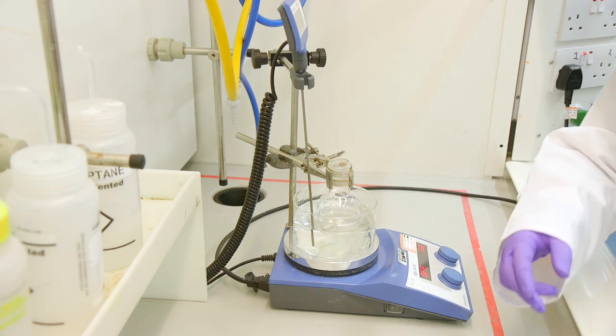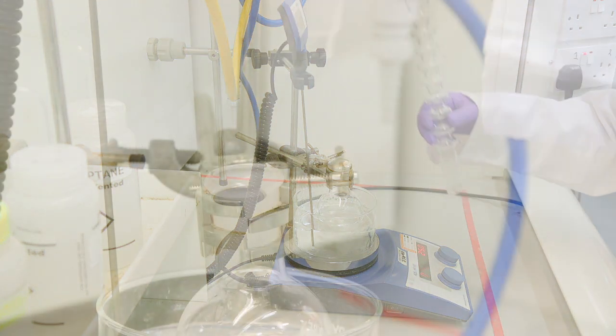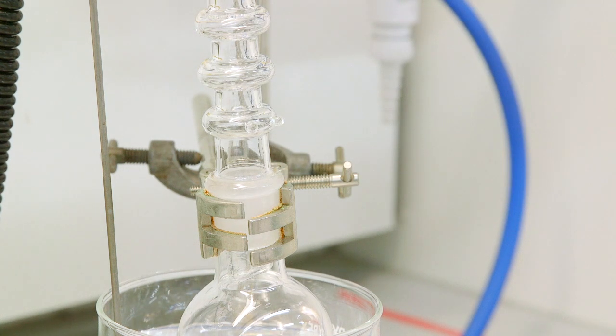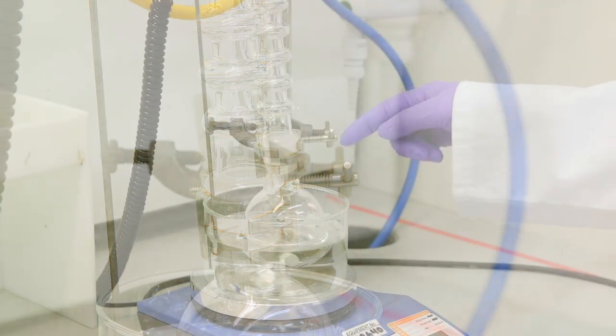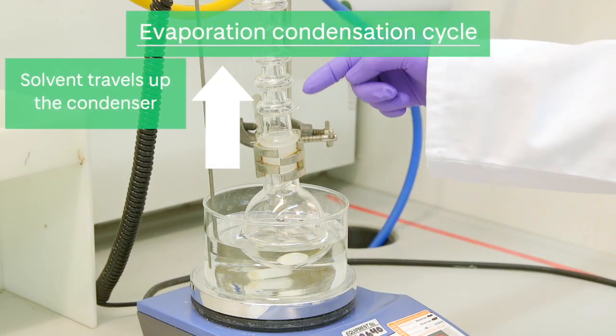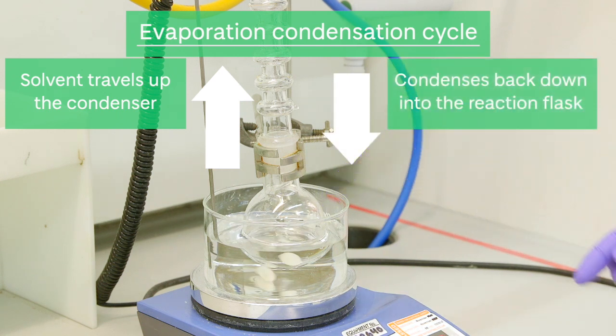Finally we will attach our condenser to the top of the flask. This is an air condenser however you can use a water condenser. As the reaction heats up the solvent will travel up the condenser and then condense back down into the reaction flask creating this evaporation condensation cycle.